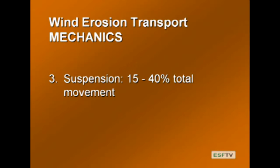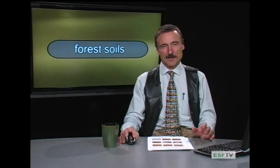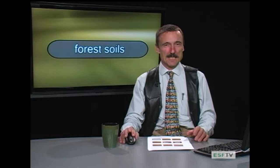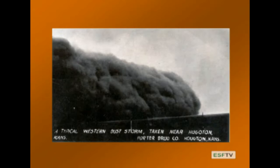The third wind erosion mechanism is suspension. Unlike saltation, which was the major one, suspension is relatively minor — fifteen to forty percent. Yet when you think about wind erosion, it's the thing that comes to mind: spectacular dust storms. This is a picture postcard from the early days of wind storms and the beginning of the Soil Conservation Service. It's the real spectacular thing we see, but it's not the majority of the problem.